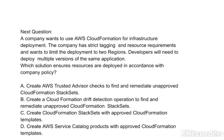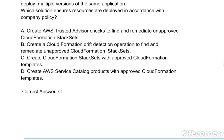Next question: a company wants to use AWS CloudFormation for infrastructure deployment. The company has strict tagging and resource requirements and wants to limit the deployment to two regions. Developers will need to deploy multiple versions of the same application. Which solution ensures resources are deployed in accordance with company policy? Options: A) Create AWS Trusted Advisor checks to find and remediate unapproved CloudFormation stack sets. B) Create a CloudFormation drift detection operation to find and remediate unapproved CloudFormation stack sets. C) Create CloudFormation stack sets with approved CloudFormation templates. D) Create AWS Service Catalog products with approved CloudFormation templates. The correct answer is option D.